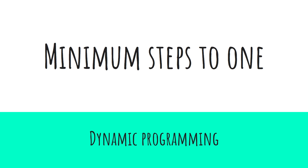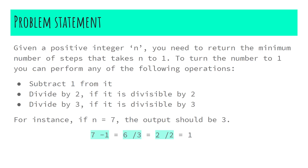Let's first see the problem statement. Given a positive integer n, you need to return the minimum number of steps that takes n to become one. To turn the number to one, you can perform any of the following operations: subtract one from the given number, or if it is divisible by two you can divide it by two, or if it is divisible by three you can divide the number by three.